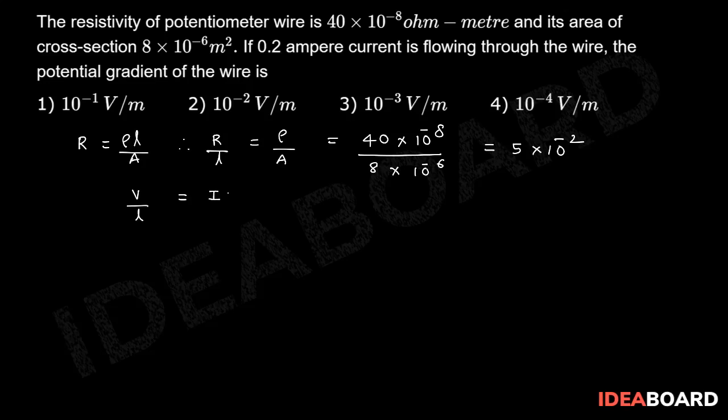Taking V by L is equal to I into R by L, 0.2 into R by L value. This is 5 into 10 power minus 2 that equal to 10 power minus 2 volt per meter.